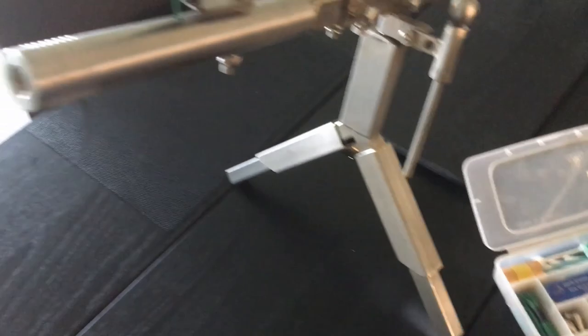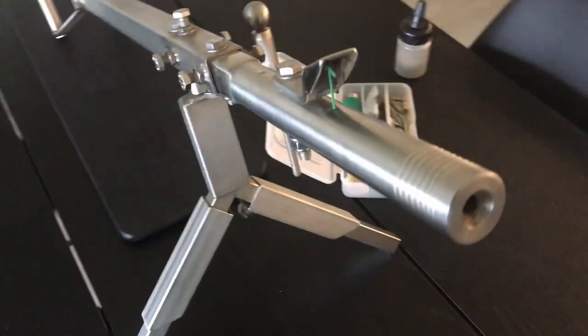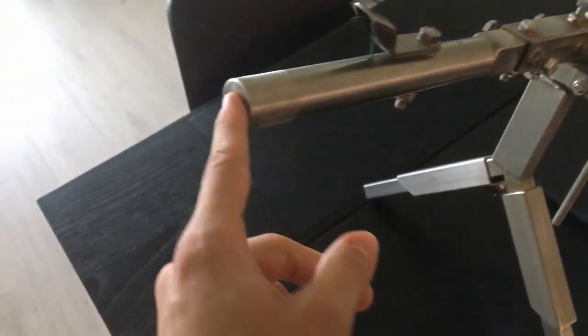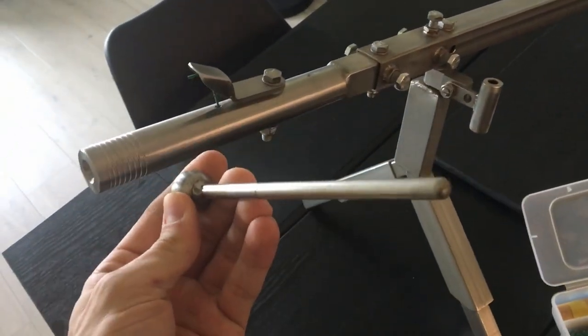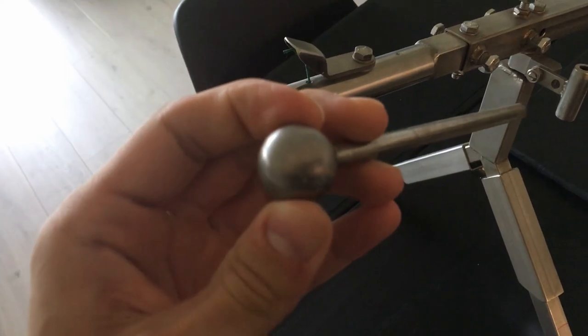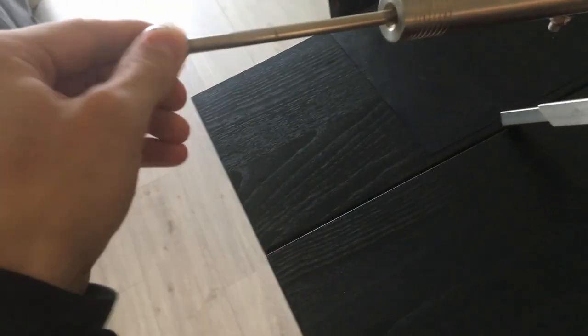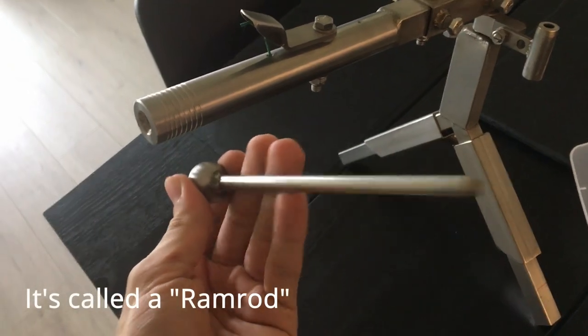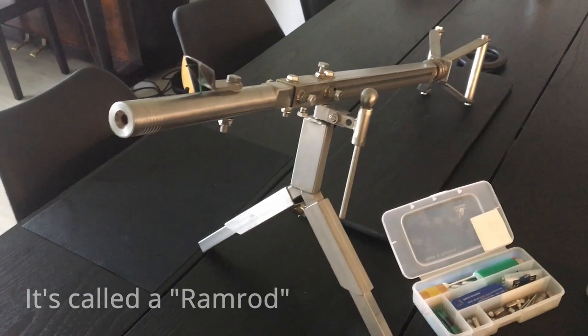But that doesn't matter now since I got the longer barrel. Basically, when you put the bullet inside, you take this tool right here, and this is made out of ball bearing and an axle. You use this to press the powder. I'm not sure what this thing is called in English, but you get the idea. And then it's fully loaded and ready to go.